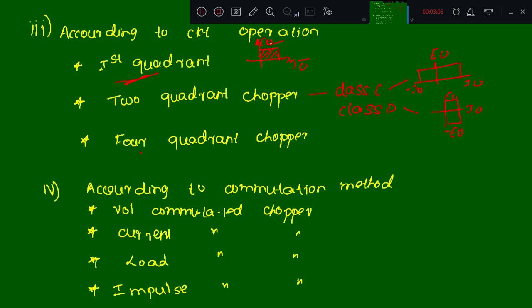In the first quadrant, both output voltage and current are positive. In the two-quadrant operation, output voltage is positive and current can be positive or negative, or output voltage can be positive or negative and current is positive. In the fourth quadrant — class E chopper — both output voltage and output current can be positive or negative. According to the commutation method, choppers are also classified as voltage commutated, current commutated, load commutated, and impulse commutated. Commutation is the method of turning off the SCR.